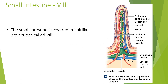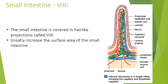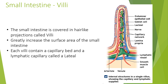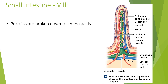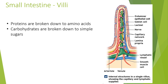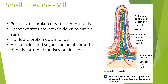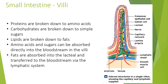The small intestine is covered in hair-like projections called villi. This greatly increases the surface area of the small intestine, and each villus contains a capillary bed and a lymphatic capillary called a lacteal. Proteins are broken down into amino acids, carbohydrates into simple sugars, and lipids into fats. Amino acids and sugars can be absorbed directly into the bloodstream via the villi, and fats are absorbed into the lacteal and transferred to the bloodstream via the lymphatic system.